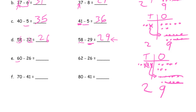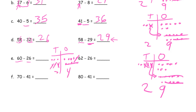60 minus 26: I don't have any ones to subtract, so I have to break one of those tens up into 10 ones. I cross out 6 of them, leaving 4 ones. Then I still have to subtract 2 tens, which leaves me with 34. Now, 62 minus 26 means the minuend is 2 more and the subtrahend is the same, so my difference is going to be 2 more: 36.